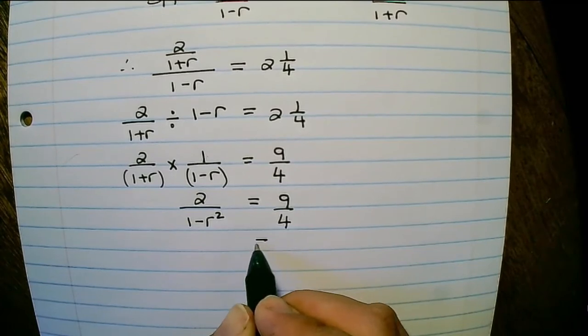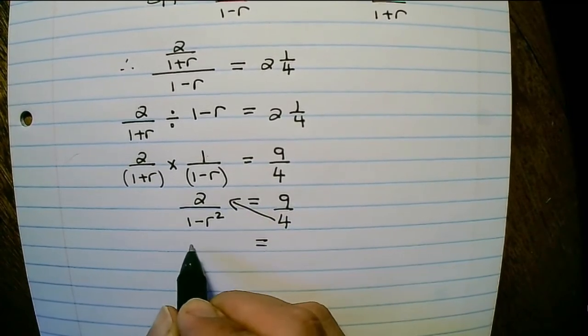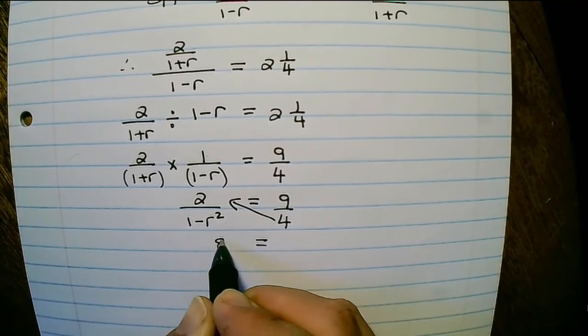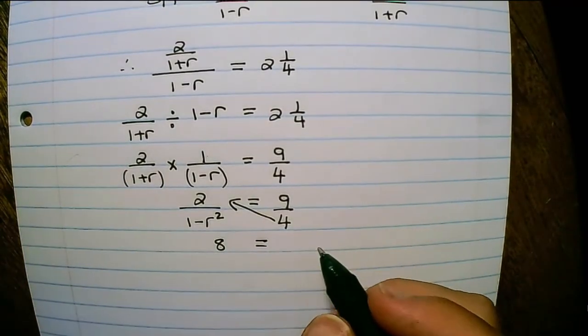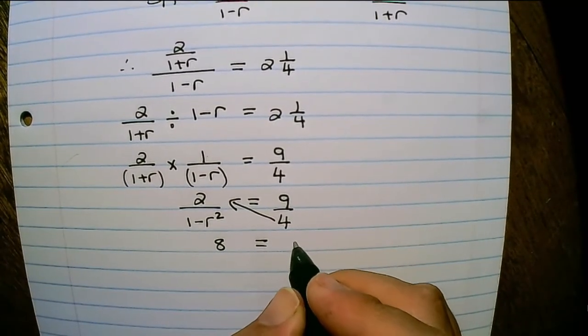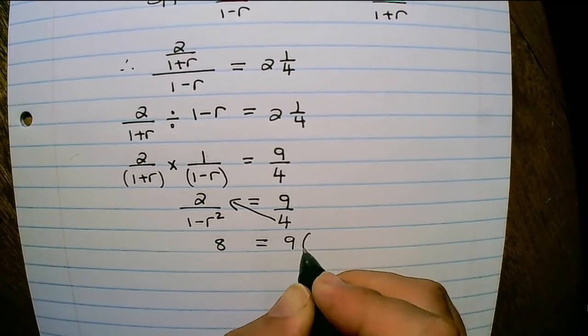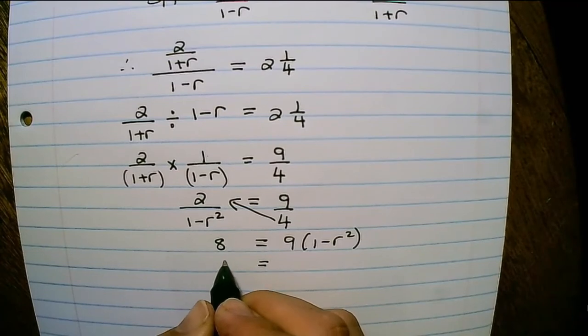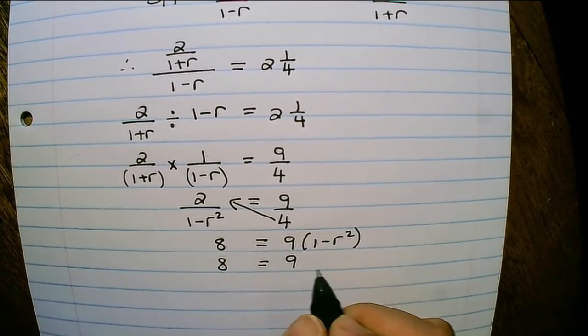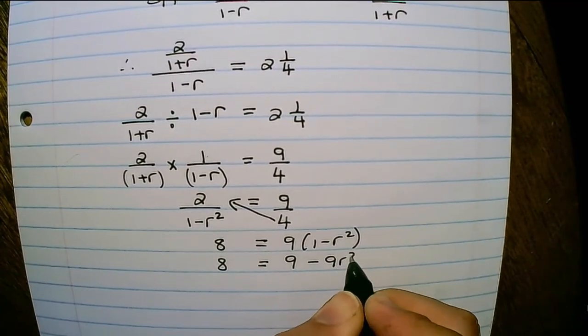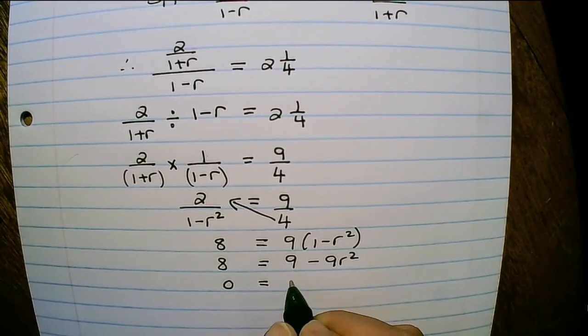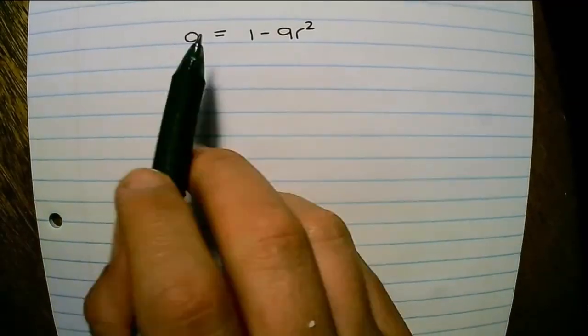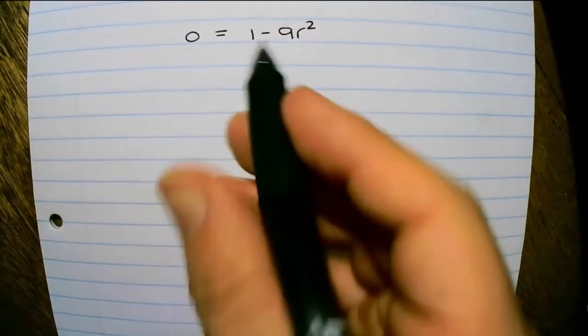Then if I cross-multiply, I have 2 times 4, which equals 8. And I have 9 times 1 minus r squared. So 8 equals 9 minus 9r squared. And if I rewrite it in standard form, I have 0 equals 1 minus 9r squared.